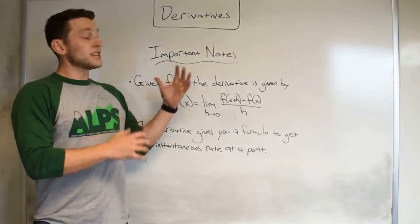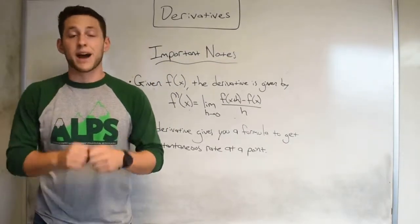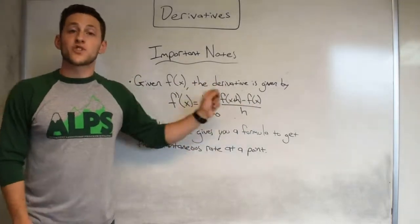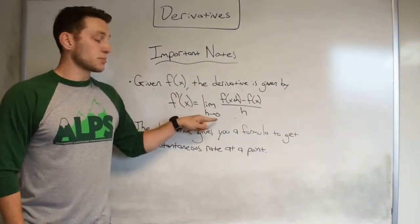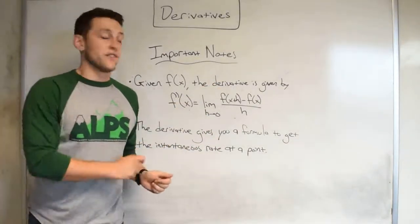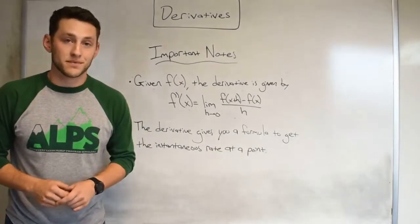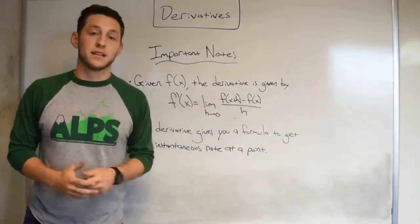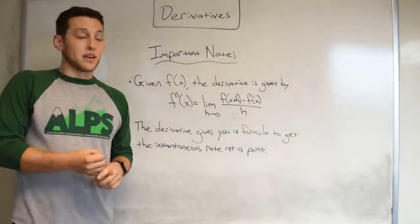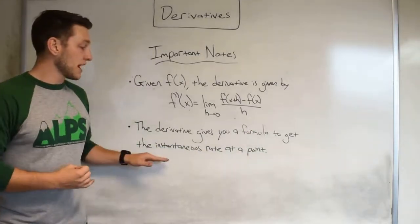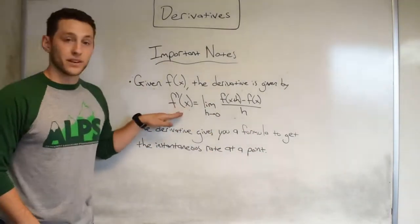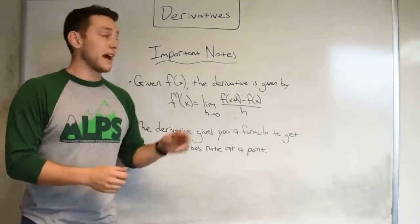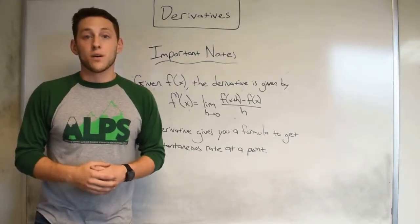Hey y'all, thanks for tuning in today on our initial covering of derivatives by the limit definition. Now some important notes to leave you on as far as dealing with derivatives when we have to do limits. Given f of x, the derivative is just going to be given by f prime of x equals the limit as h approaches zero of our difference quotient f of x plus h minus f of x all divided by h. Now, when actually doing these problems out in examples, it pays to go ahead and simplify the difference quotient before trying to take the limit. Secondly, the derivative is just going to give us an equation or a formula to get the instantaneous rate of change at a given point. So once you land on a derivative, a derivative is just a special type of function that for any x you plug in, you get the instantaneous rate of change of that function f of x at that point x.